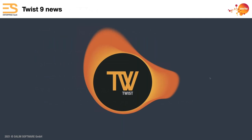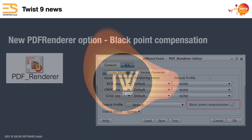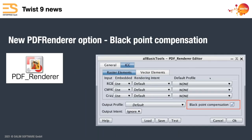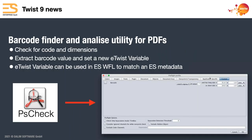Moving to Twist — what's new. They've added black point compensation to the ICC engines, something many customers have asked for over the years. It now has black point compensation and you'll see it in a couple of places. PS Check now has a barcode finder and analyze utilities for PDFs — it's one barcode per file, can extract the barcode and create a Twist variable of it, or check it against a regular expression. Using a Twist workflow, you could match that variable against metadata on the job ticket to make sure it's correct.